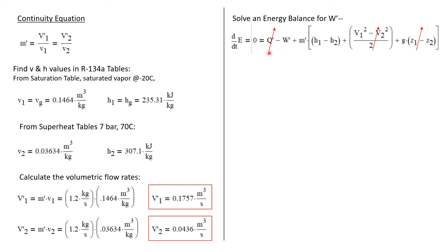Now this compressor is insulated, so Q dot is zero. We were told to ignore any changes in kinetic and potential energy. So we'll take those terms as zero also.